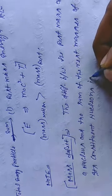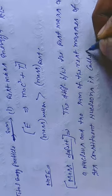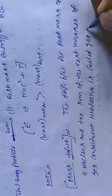This is called its mass defect. The difference between the rest mass of a nucleus and the sum of the rest masses of its constituent nucleons is called its mass defect.